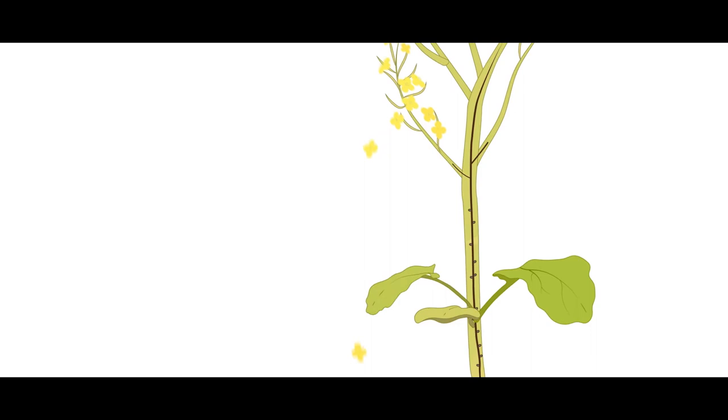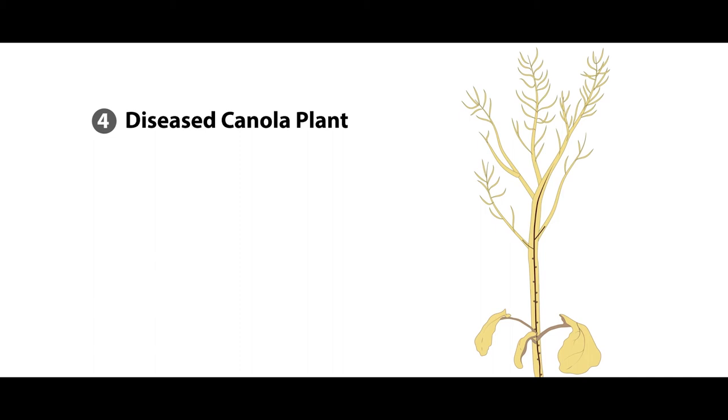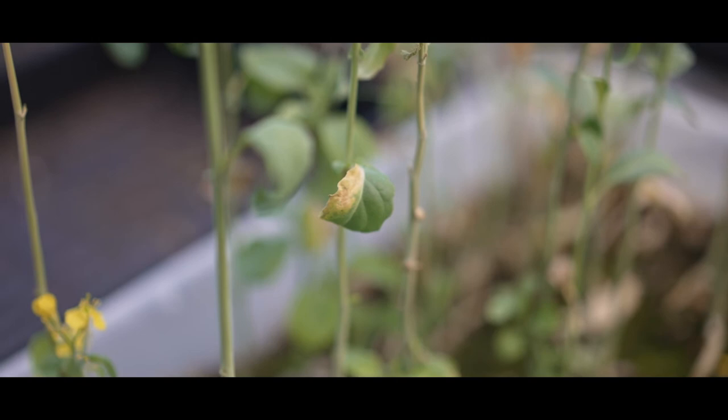The interference of water and nutrient uptake caused by verticillium stripe can cause the crop to show signs of stunting and premature senescence.